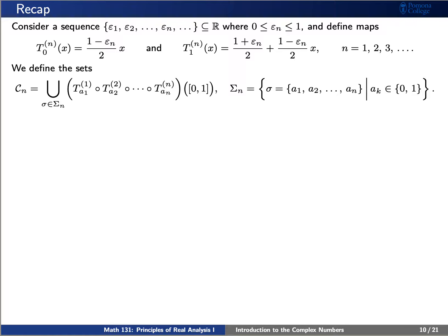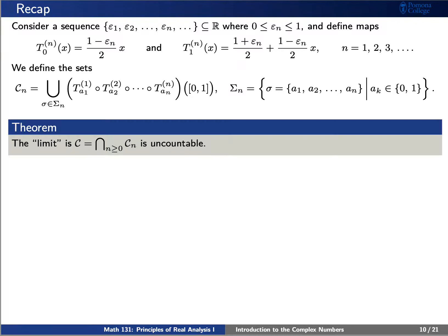Here the intuition is that t0 and t1 will take the closed interval from 0 to 1 and divide it into two sub-intervals, where the distance between the two is epsilon sub n. Our limit, c, from this construction is always uncountable.